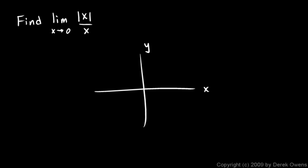If x is say 3, then we have a 3 over 3, which is just 1, so let's plot a point there. If x is 2, then we have 2 over 2, so that's just 1.